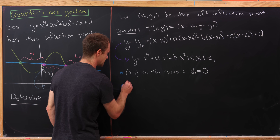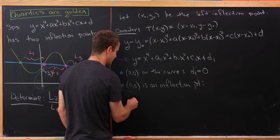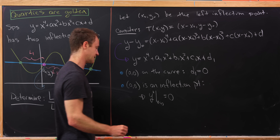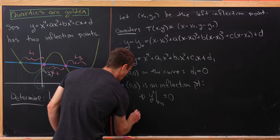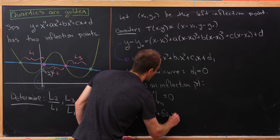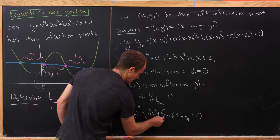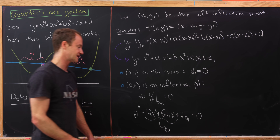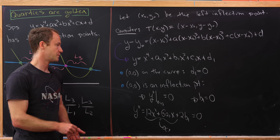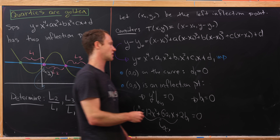Now let's use the fact that (0, 0) is an inflection point, meaning the second derivative is zero there. The second derivative is y″ = 12x² + 6a₁x + 2b₁. Setting that equal to zero at x = 0 tells us that b₁ = 0. So putting this all together, we can work with a much simplified version of the curve.